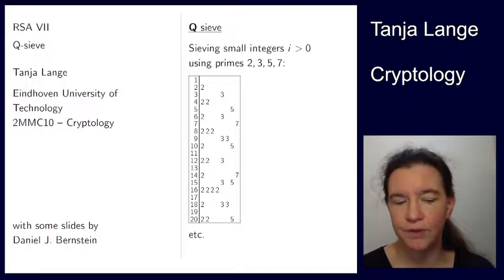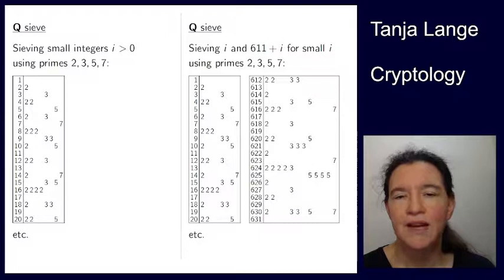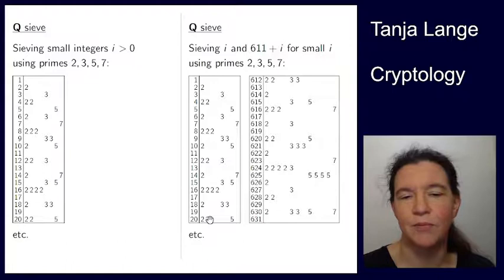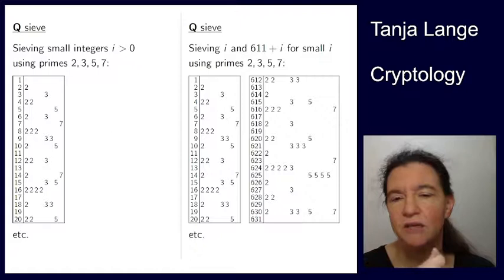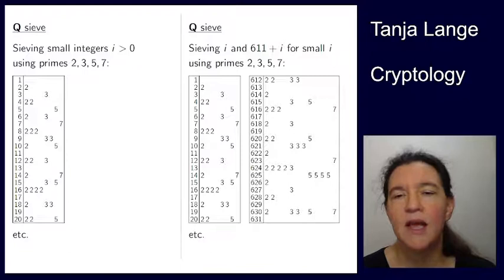And now to get the 611 that I want to factor into the picture, I'm going to expand this thing into two parts. So what you see here on the right is still the same, on the left is still the same picture that you have over here, so I kept it there for comparison. And then on the right I've taken the same integer plus 611. So 1 matches 612, 2 matches 613, 3 matches 614, etc.